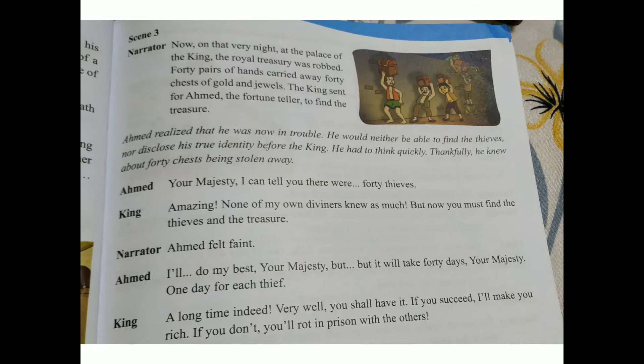King: 'Amazing — none of my own diviners knew as much. But now you must find the thieves and the treasure.' When he told that there were forty thieves, the king was amazed and wanted Ahmed to find both the forty chests and the thieves.